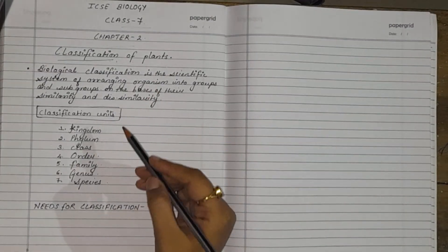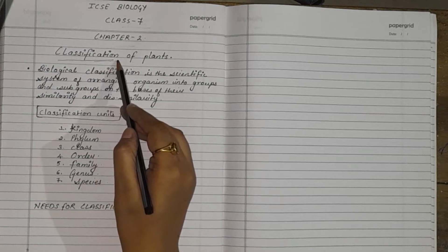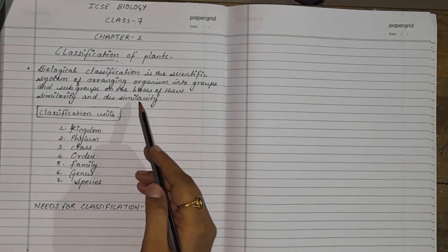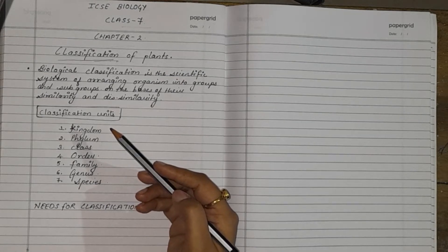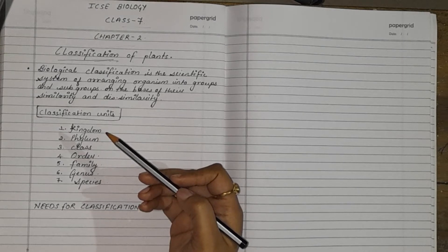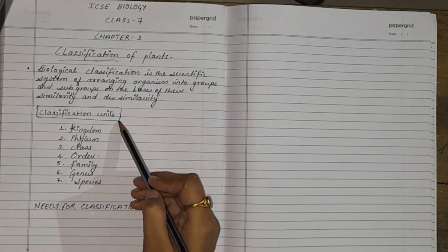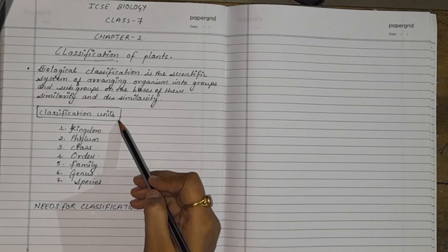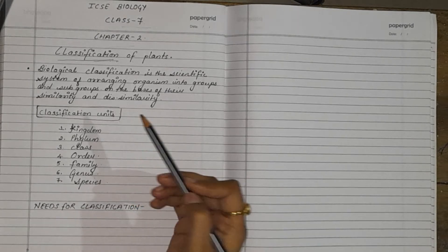In this chapter we are going to cover various topics such as what is classification, what is need of classification, what are the advantages of classification. Then we will classify the organisms in 2 kingdom classification. Then we will study about the 5 kingdom classification which was given by Whittaker. Then what are the examples of each kingdom and the characteristic features of kingdom plantae as well as other kingdoms also.